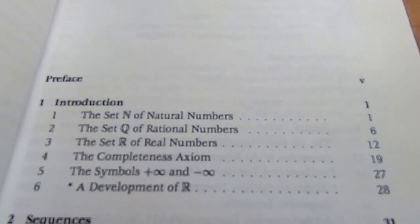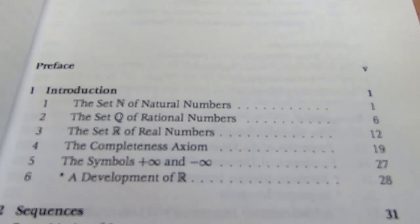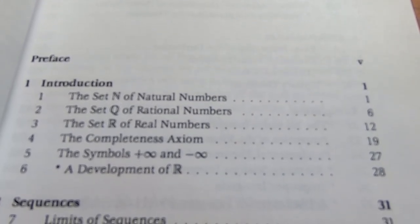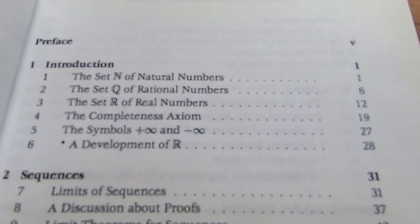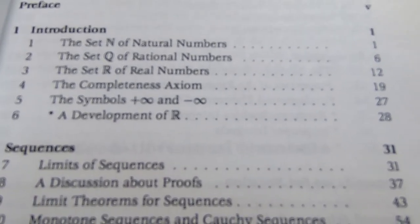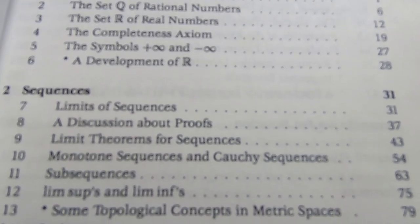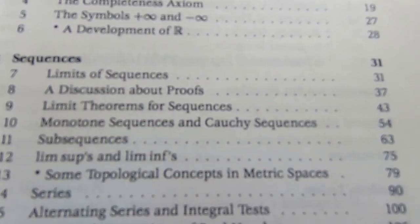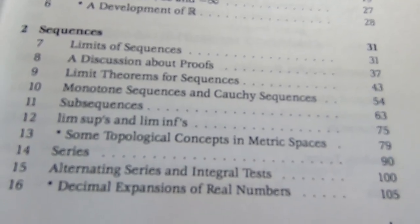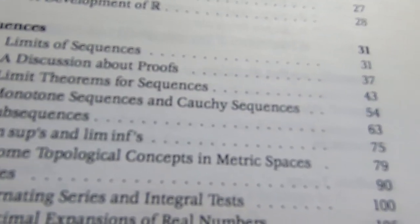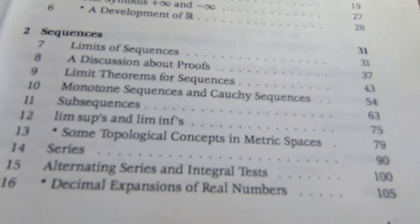This is the table of contents. It starts off with the natural numbers and then the rational numbers, the real numbers, the completeness axiom. It talks about the symbols infinity and negative infinity. Then it goes on to sequences. It talks about limit superior and limit inferior. It even talks about some concepts in metric spaces. Really cool stuff.